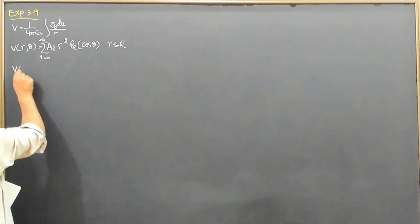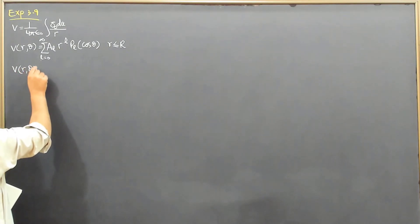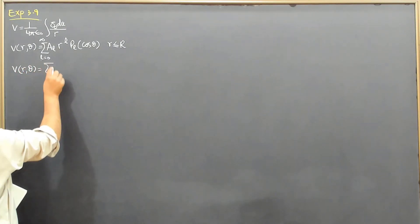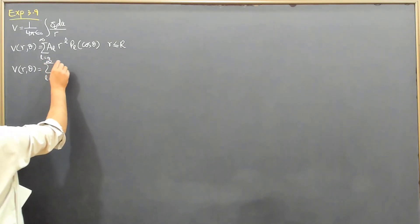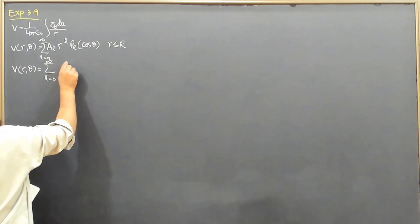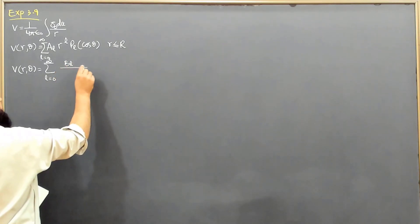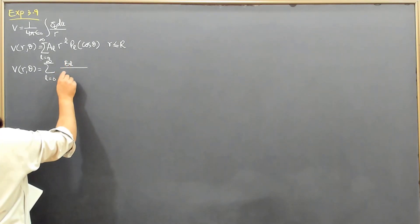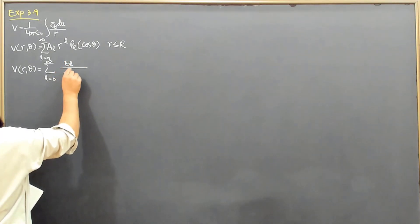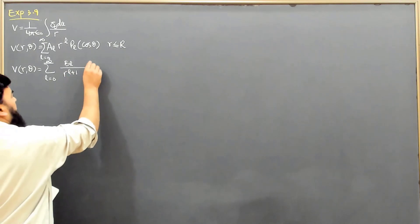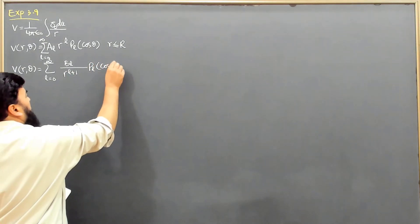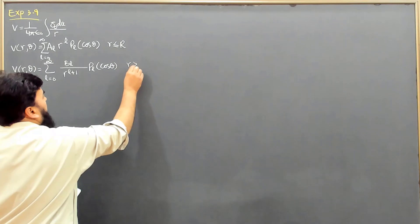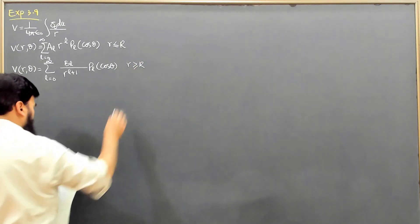For the outside of the sphere, the summation runs from l=0 to infinity, and this will be B_l * R^(-(l+1)) * P_l(cos theta) for r greater than or equal to R. Here A_l blows up so only B_l remains.